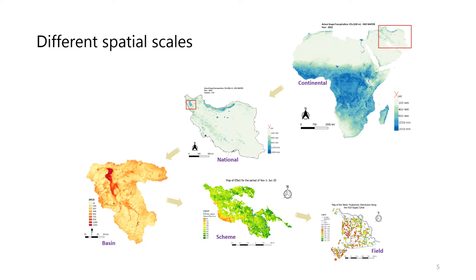Further, you can zoom into a country — for example Iran — and get insights about the spatial variation of actual evapotranspiration in Iran. If you are interested more in studying a basin, in this case Urmia Lake basin, you will get more insights about spatial variation of actual evapotranspiration. As expected, you can see irrigation schemes and water bodies having higher evapotranspiration and other areas having lower. And further, you can zoom into a scheme in this area of the basin, and also go further deep into field level.